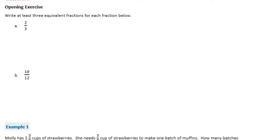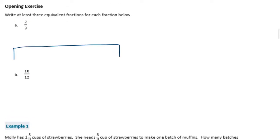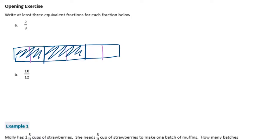For two-thirds, remember to make an equivalent fraction we can either draw a model. If I have two-thirds and I want to make an equivalent fraction, I could separate it — before we had two-thirds, and then when I separated it I now have four-sixths. So I can keep doing that, or I can just multiply the numerator and denominator by the same number. To get from two-thirds to four-sixths, we multiplied by two over two.